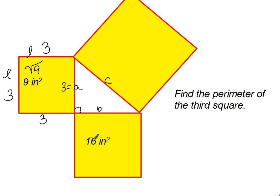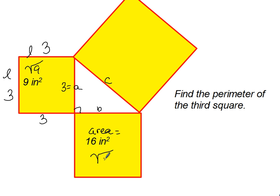On the second square we have an area of 16, so that means that the length times the width of this square is 16. To find out the length of each side you take the square root of that, and we find that each side has a length of 4.